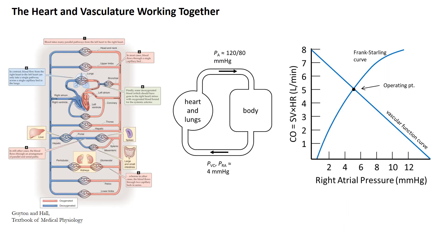The reason we discuss the Frank-Starling mechanism and the vascular function curve together is that we can put them both on the same plot — which is why we made that confusing switch of the x and y axes on the vascular function curve. Putting them together helps us think about how the heart and vasculature work together. We're looking at these at a very coarse level — the view from 35,000 feet — lumping together the detailed systemic and pulmonary vascular beds into this simple representation.